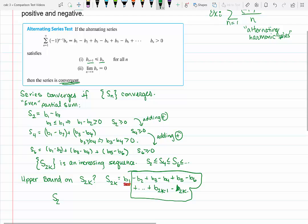So S sub 2k is going to be B1 minus B2 but then I was adding B3 so that's like a minus a minus. Then minus B4 because B4 had a negative coefficient but B5 was positive before so minus a minus. So then the next one would be minus B6 minus B7 so on and so forth.